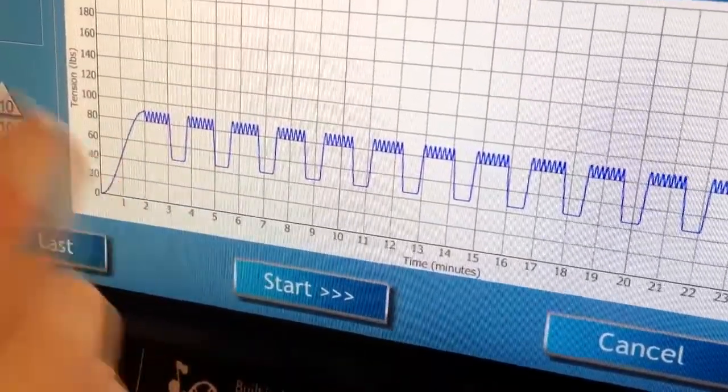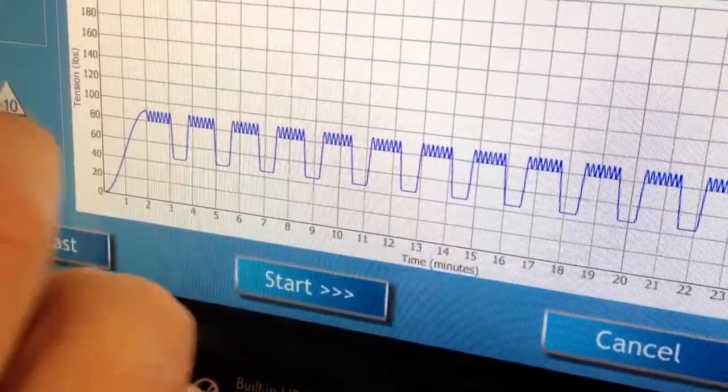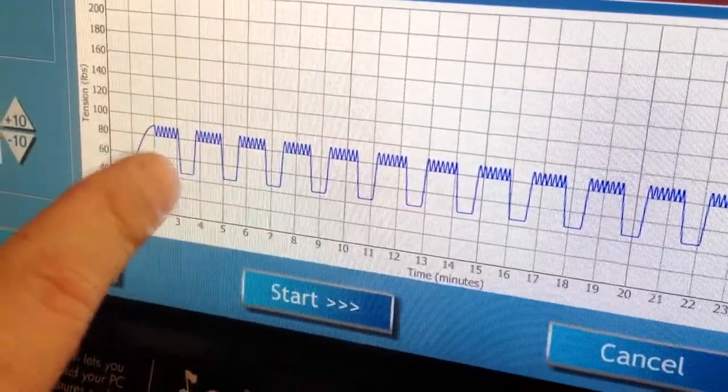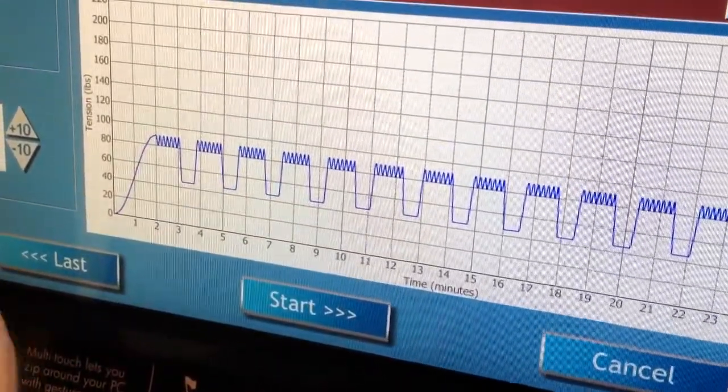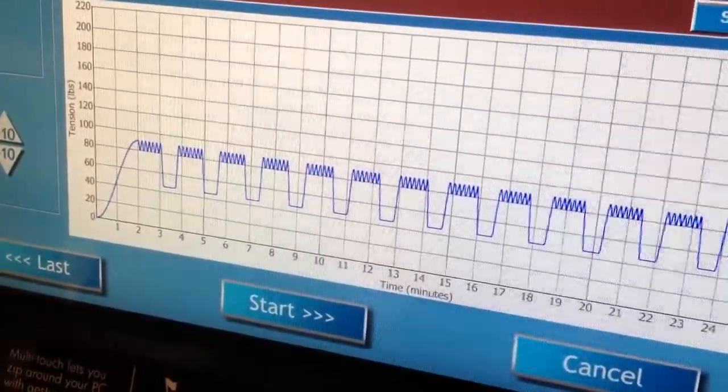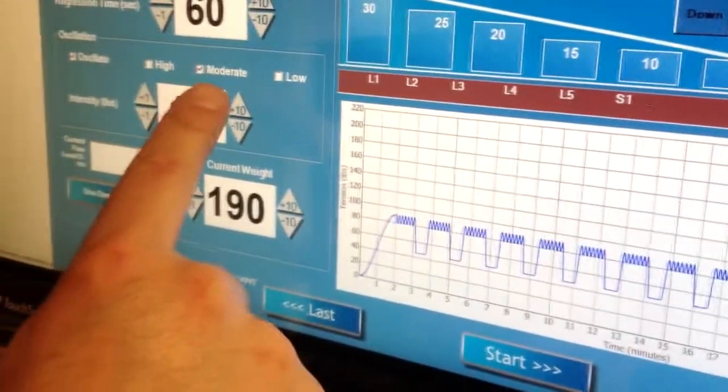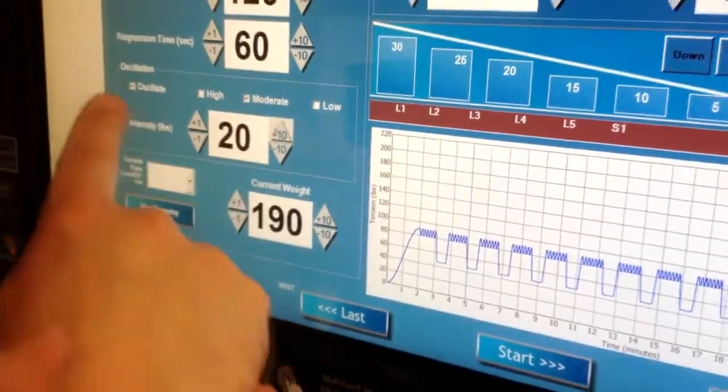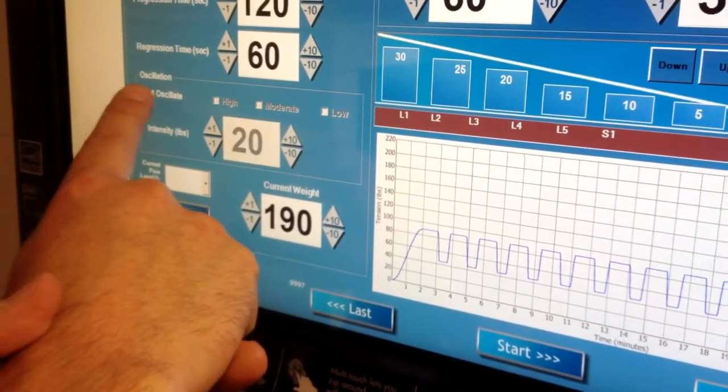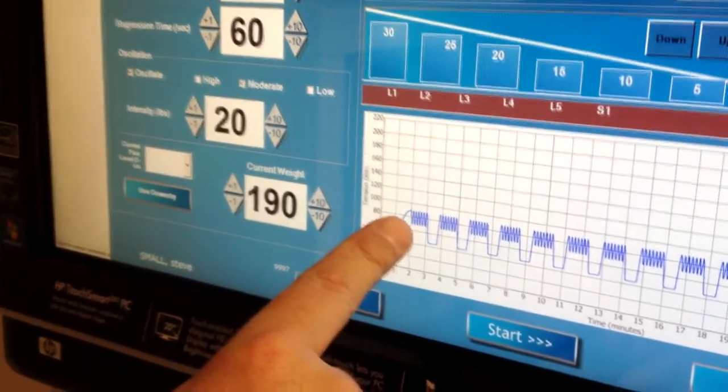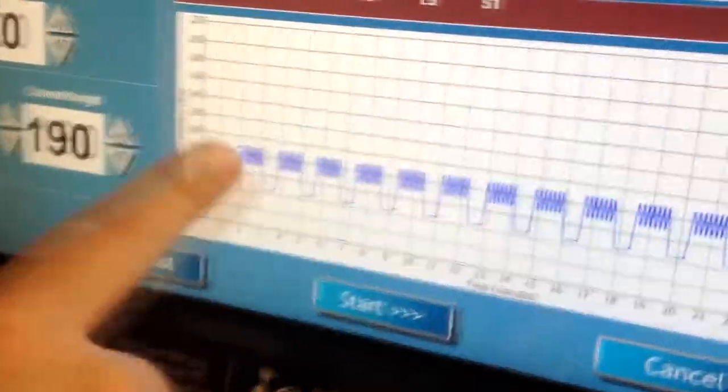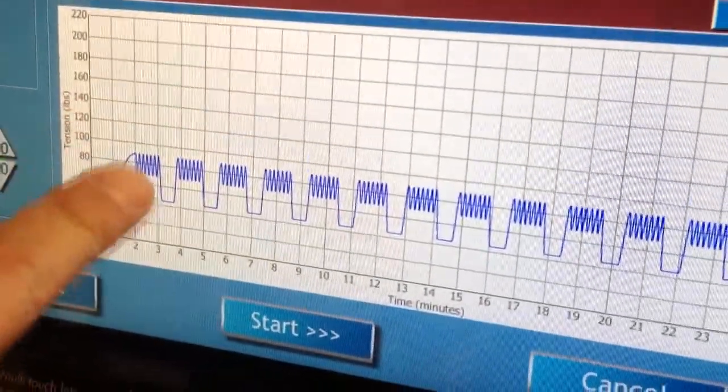What I wanted to look at was the possibility to increase the amplitude of that oscillation. And so over here we can adjust the intensity. So if I increase that intensity by 10 pounds, we can see here that we have a much greater degree of oscillation.